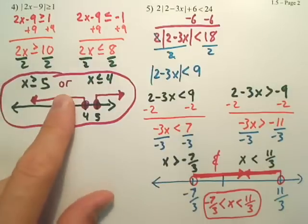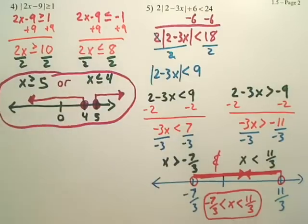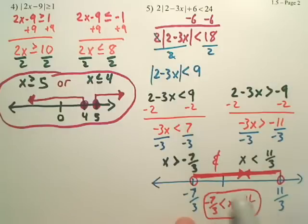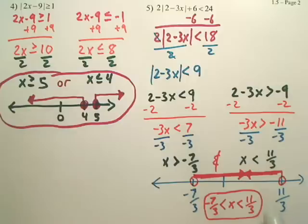You have to write your ands in this form or else it's wrong. Ors can be written like this. You're good. Ands have to be written in this form. They always are graphed in between. Ors are always graphed out.